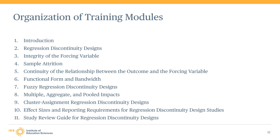The second module focuses on the type of research designs that can be reviewed using the WWC RDD Standards, and discusses what criteria are used to determine whether a study is eligible for review. The third module describes WWC RDD Standard 1, referred to as the integrity standard, which requires RDD studies to establish the integrity of the forcing variable used in the design. The fourth module describes RDD Standard 2, the attrition standard, which requires RDD studies to have an acceptable level of overall and differential attrition rates. The fifth module describes RDD Standard 3, the continuity standard, which requires RDD studies to establish continuity of the relationship between the outcome and the forcing variable.